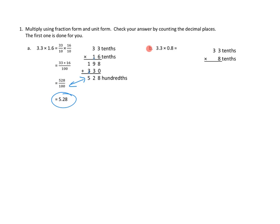Let's take a look at 1b and see if we can mimic how they've attacked these problems. I'm noticing that 3.3, or 3 and 3 tenths, is the same as 33 tenths. So 33 tenths times 8 tenths — that's what our problem is if we express it in fractional form. I can see they've set that up over here: 33 tenths times 8 tenths. Let's go ahead and do this multiplication.